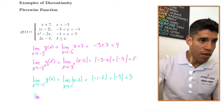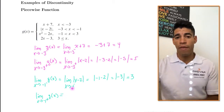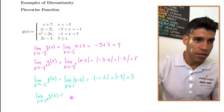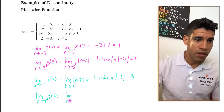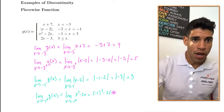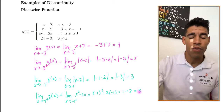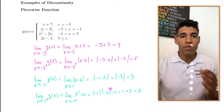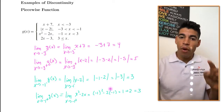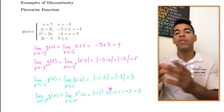Now let's do the same when x approaches negative 1 from the right of g of x. Approaching from the right means x is greater than negative 1, so we use x squared minus 2x. Substituting: negative 1 squared minus 2 times negative 1 gives 1 plus 2, which equals 3. Because the limits are the same but the point is not defined, we have a removable discontinuity.